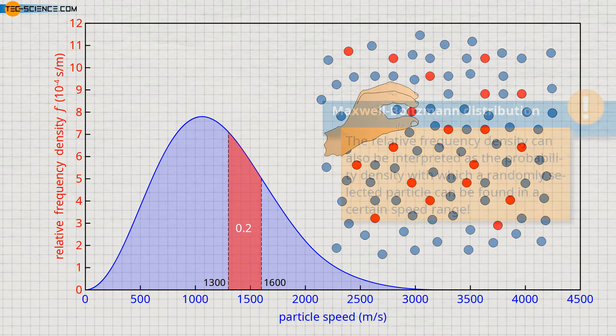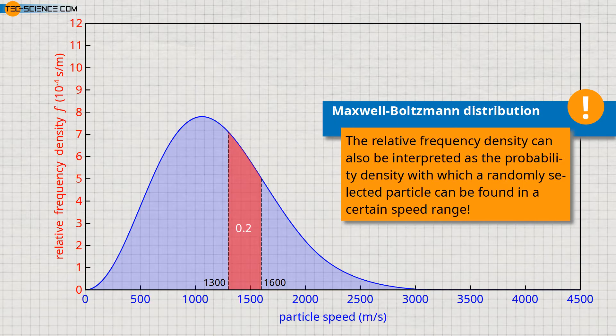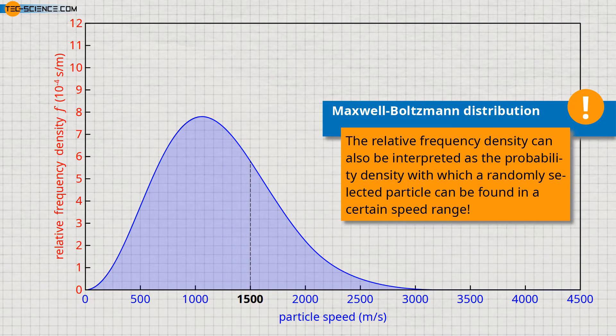This example shows that the relative frequency density can also be interpreted as the probability density with which a randomly selected particle can be found in a certain speed range. With this interpretation it also becomes clear that if only a certain speed is considered, the area under the curve becomes zero. Thus, the probability of finding a particle with exactly this velocity is also zero, meaning that there is no particle with an exactly given speed.